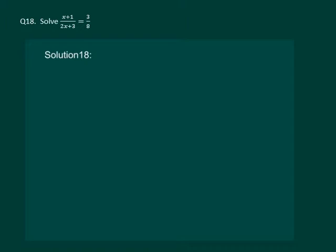Let us read the question. Solve x plus 1 whole by 2x plus 3 equal to 3 by 8.